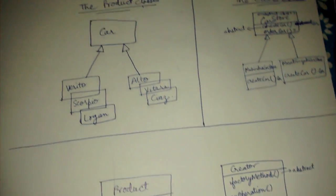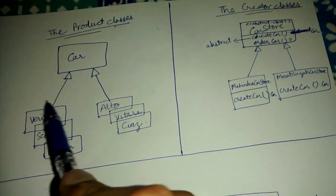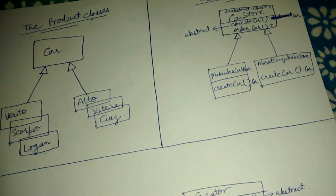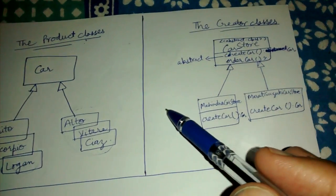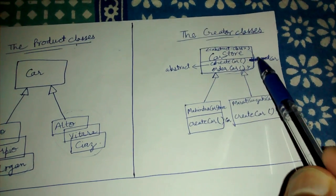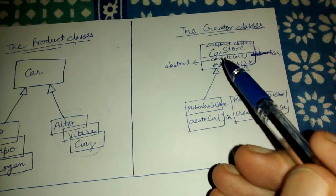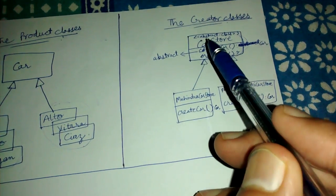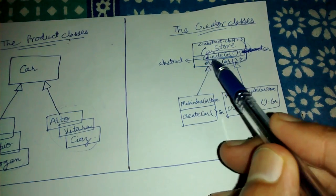Now let's quickly skip to the class diagram. These are the product classes — car is the base class. On one side we see Verito, Scorpio, and Logan which are Mahindra's cars, and on the other side we see Alto, Vitara, and Ciaz which are Maruti Suzuki's cars. In parallel we see the creator classes — car store, the class having the actual business logic with the order car method, and an abstract factory method which is the create car method. This is the reason this pattern is called the factory method pattern.